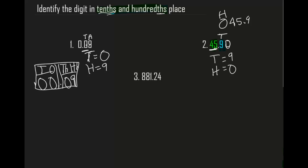Now let's do our third problem. We have 881.24. This time I'm going to combine both methods. I'm going to highlight the 881 in green. Now I'm going to highlight the 2 in blue, and then highlight the 4 in yellow. Now that we have separated them, let's try to find the answer.